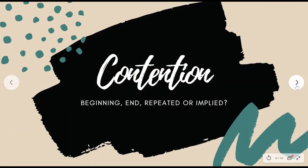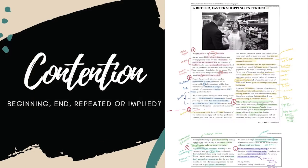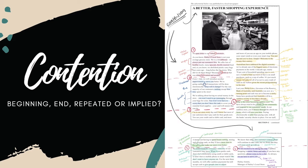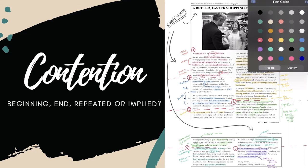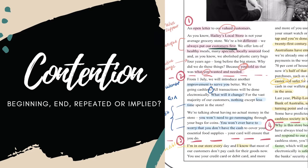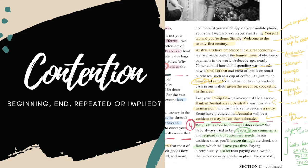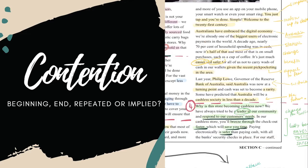Step one for analyzing structure: contention. If a contention is stated at the beginning of an article, the writer is fairly confident in their views and spends the rest of the article consolidating that view. If stated in the middle or end, this shows the writer is balanced, exploring all arguments before making an assertion. If the contention is repeated — common in speeches — it implies consistency supported by evidence. If the contention is implied, it allows the reader to arrive at the same conclusion as the author, suggesting it is an inevitable decision.